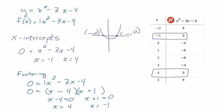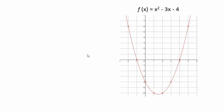So let's go take a look at this graph. There it is right there. x squared minus 3x minus 4. And there are those x-intercepts we just found. Positive 4 and negative 1.